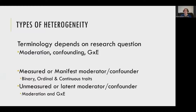We could be asking questions about moderation, about confounding, or about the interaction between genetic and environmental parameters. In our models we can estimate the effects of measured or manifest moderators or confounders, or unmeasured or latent moderators or confounders. Our measured confounders or moderators can be binary, ordinal or continuous, and we can think about both moderation and interaction in the unmeasured or latent space.